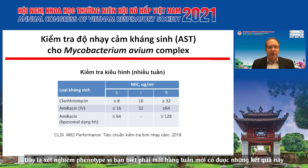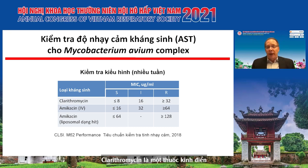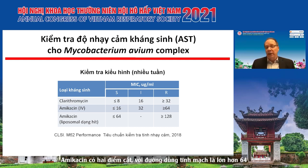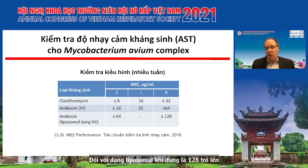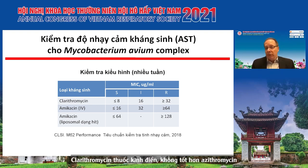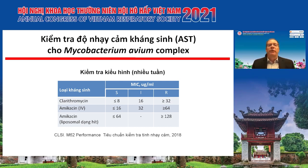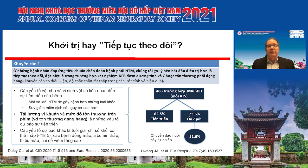For MAC susceptibility testing, clarithromycin is the class agent — the cut point for resistance is an MIC of 32 or greater. For amikacin there are now two cut points: for the IV formulation it's 64 or greater, and for the liposomal inhaled preparation it's 128 or greater. Clarithromycin is the class drug but not a better drug than azithromycin — in fact, we recommend azithromycin in practice.